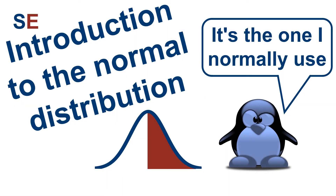The normal distribution is the most important probability distribution in statistics. Let's take a look at where it comes from, what it's used for, and why it's so important.